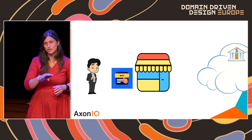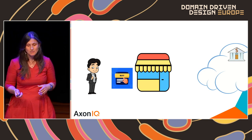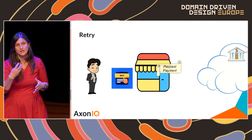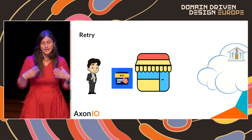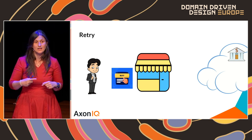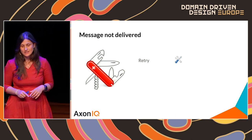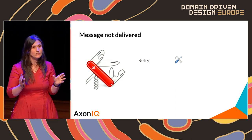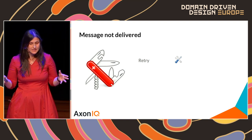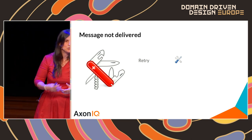Whatever the reason, one solution is to implement a retry mechanism: when the first component doesn't receive an answer within a certain time, or when it receives an explicit temporary error, the infrastructure responsible for dispatching can retry sending the message. This is our first technical solution — it can be refined with strategies like exponential backoff.